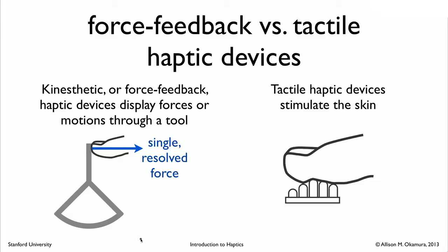Tactile haptic devices, on the other hand, are designed to stimulate the skin. There are many types of tactile haptic devices, some designed very creatively. One example is a pin array—one of the first types designed in the haptics research community. Braille displays for the blind are also of a pin array type.